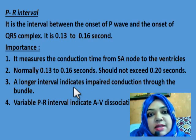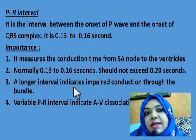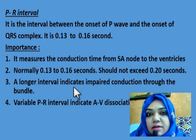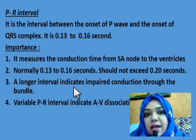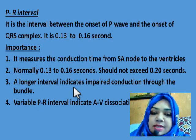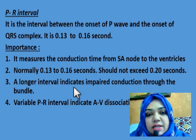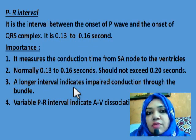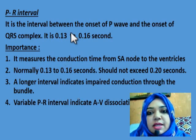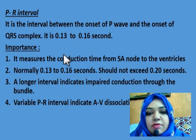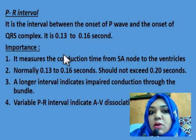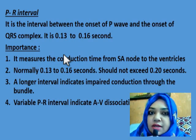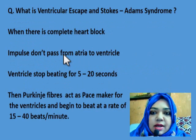A longer PR interval indicates impaired conduction through the bundle, meaning there is a delay in conduction from the SA node to the ventricle. If the PR interval is variable — varying from beat to beat — it indicates atrioventricular dissociation, meaning the atria are contracting at their own pace and the ventricles at their own pace, with no association between them.